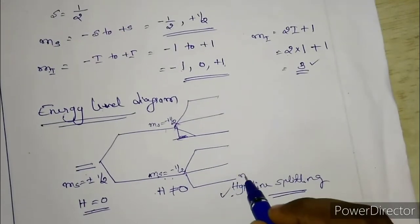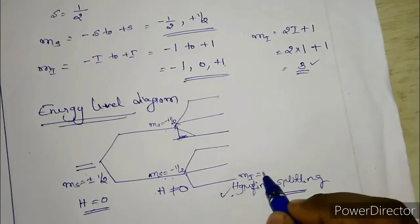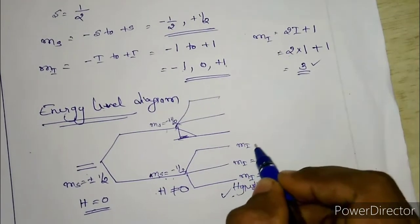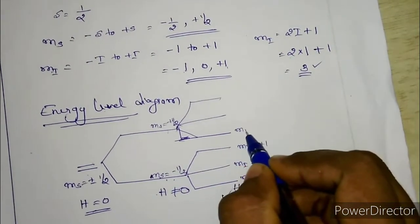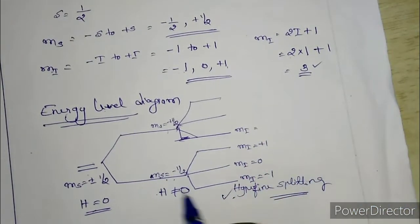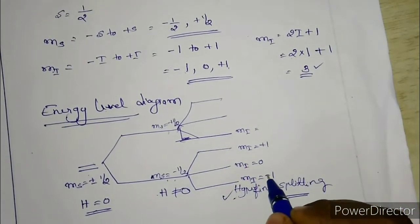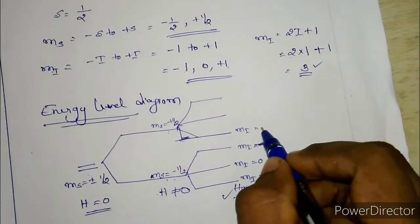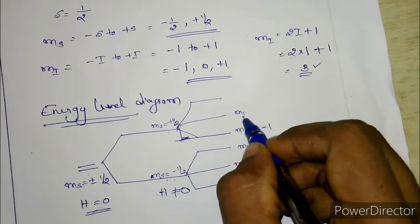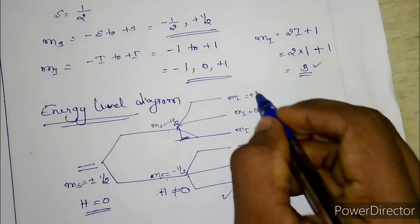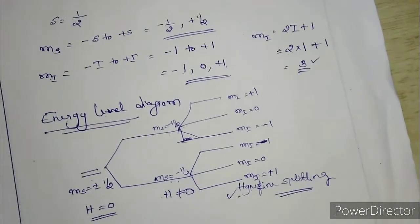The mI values for the upper ms level are: mI = −1, mI = 0, and mI = +1. Similarly for the lower ms level: mI = −1, mI = 0, and mI = +1. So there are six mI levels in total.